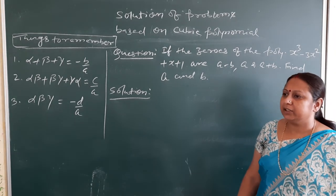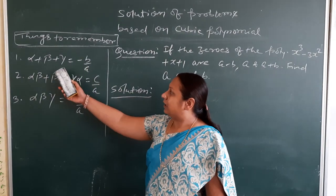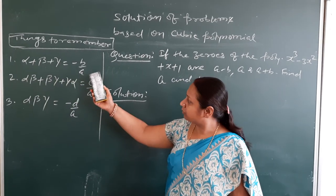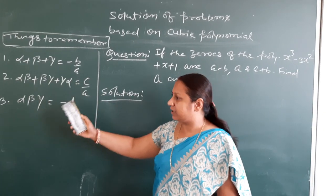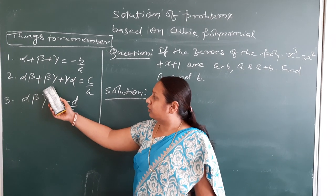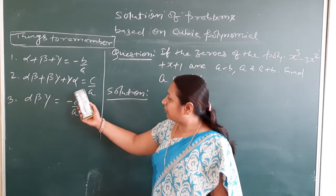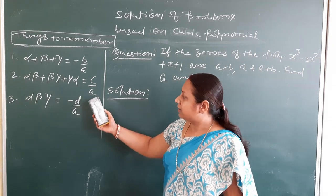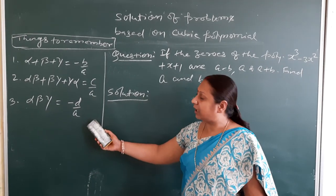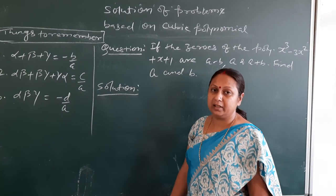Before that, remember: the sum of zeros alpha plus beta plus gamma equals minus b by a. The sum of the product of zeros taken two at a time — alpha·beta plus beta·gamma plus gamma·alpha — equals c by a. And the product of zeros alpha·beta·gamma equals minus d by a.